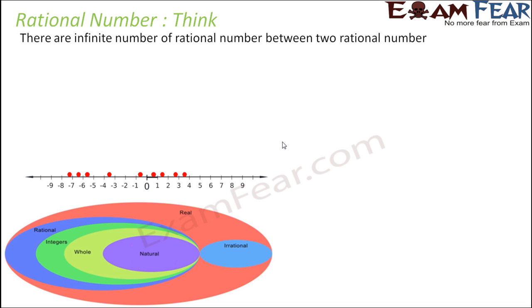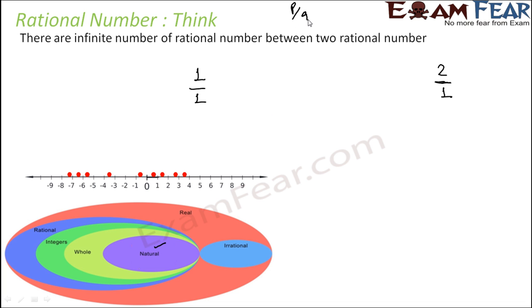Have you ever imagined that there can be infinite rational numbers between two rational numbers? Let's take any two rational numbers — let's take 1 and 2. Both 1 and 2 are rational numbers because you can write 1 as 1 by 1 and 2 as 2 by 1. All natural numbers are also rational numbers since you can write them in P by Q form.